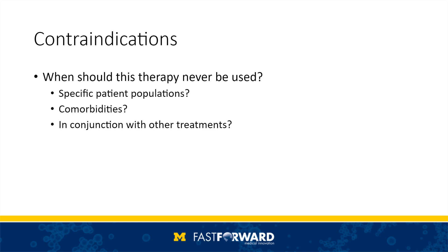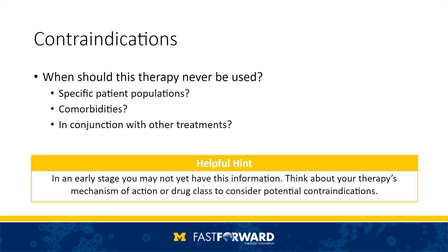Under contraindications, you must ask yourself when should this therapy never be used. Is there a specific patient population that should never use it, such as women of childbearing age and teratogens? What about comorbidities like hemophilia and anticoagulants, or use with other treatments like immunotherapy and steroids? If you are in the early stages of your research, you may not yet have this information. Think about your therapy's mechanism of action or drug class — do either suggest potential contraindications? Include these in your preliminary TPP, design your research plan to address these questions, and revise your TPP as new information comes to light.